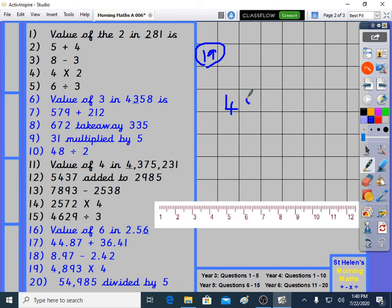And time for question 19. 4,893 times 4. 4,893 times 4. 4 times 3 is 12. 4 times 9 is 36. Plus 1 is 37. 4 times 8 is 32. Plus 3 is 35. 4 times 4 is 16. Plus 3 is 19. 19,572. 19,572.